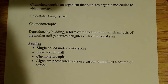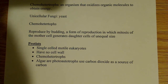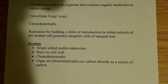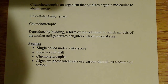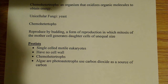Protozoa are also chemoheterotrophs, and algae, which is a specific type of protist, are photoautotrophs — they use carbon dioxide as their source of carbon and go through a process of photosynthesis involving light energy from the sun.